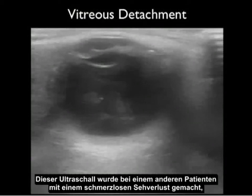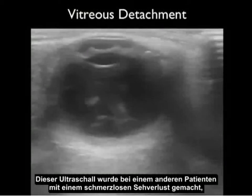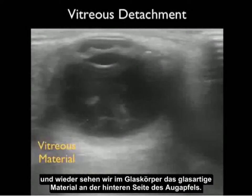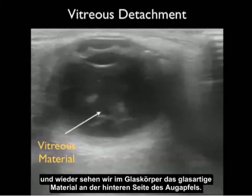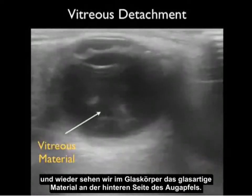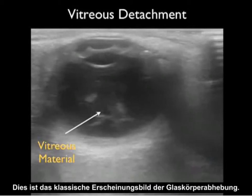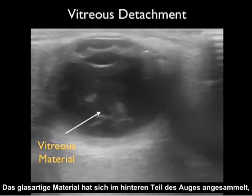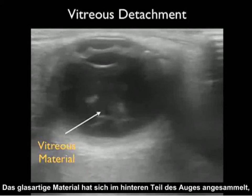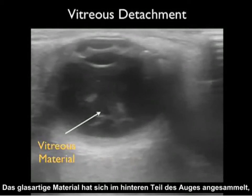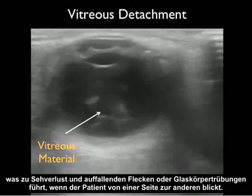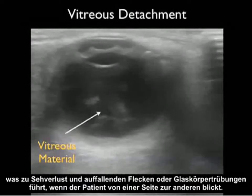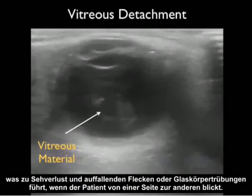This ultrasound was taken from another patient with painless loss of vision. Looking into the vitreous body, we see vitreous material present within the posterior aspect of the eye. This is the classic appearance of vitreous detachment — all that vitreous material accumulated within the posterior aspect of the eye, leading to vision loss and prominent speckles or floaters as the patient looked from side to side.